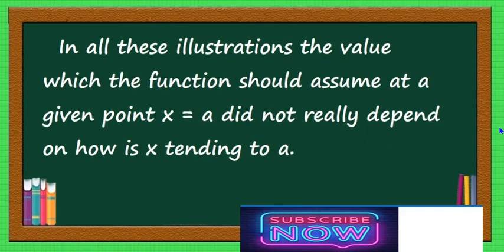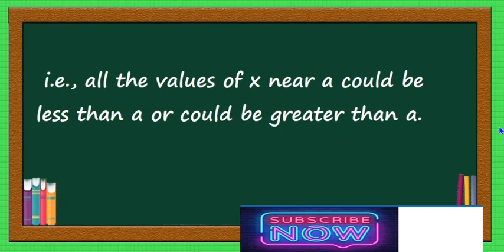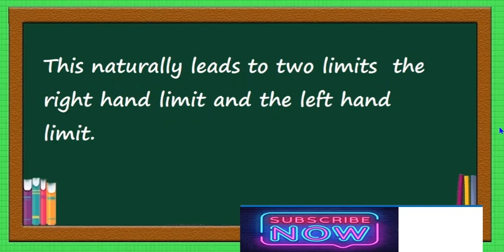In these illustrations, the value which the function should assume at a given point x = a did not really depend on how x tends to a. Note that there are essentially two ways x could approach a number a — either from the left or from the right — and this naturally leads to two limits.